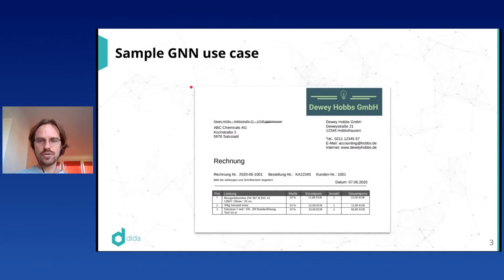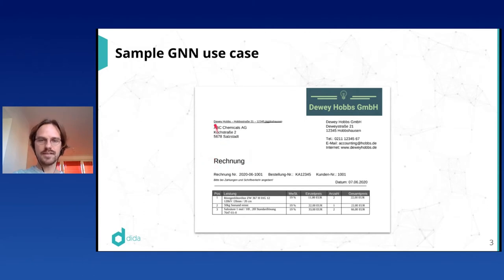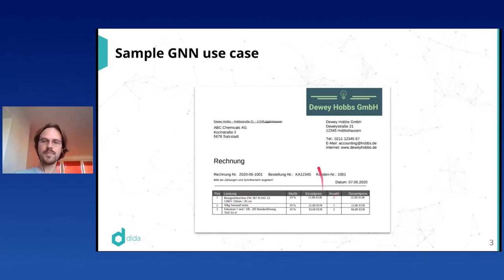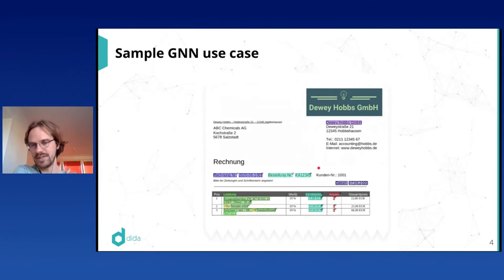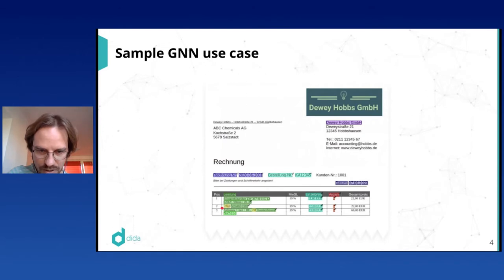To guide our discussion, I'll pick a sample use case inspired by a project we have, which is to understand documents in tabular format. What we see here is a picture of an invoice or bill. This document has headers, addresses, dates, and then an interesting table listing products or services with descriptions, prices, and quantities. We want our machine learning model to classify the words in this document appropriately — identifying dates, metadata, descriptions, units, prices, and quantities.